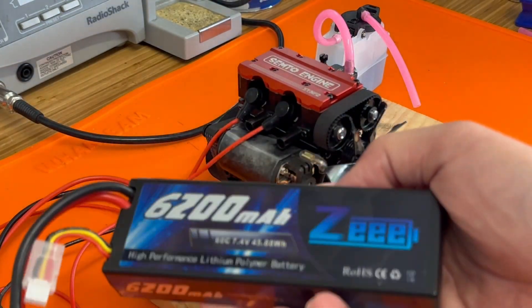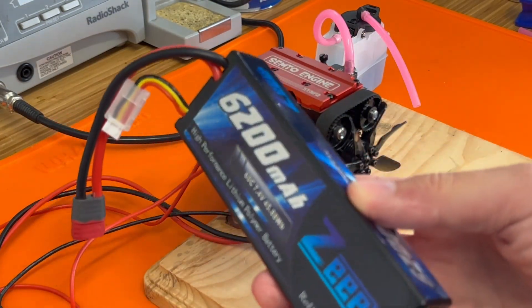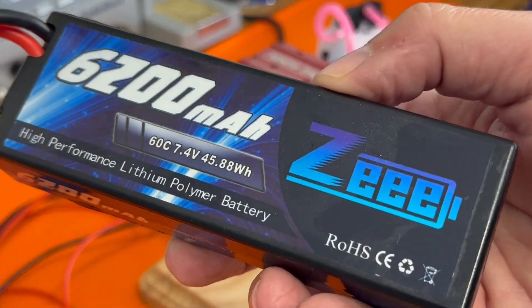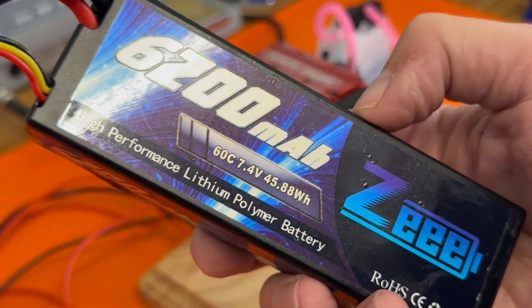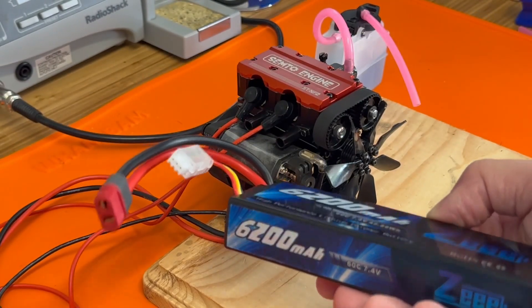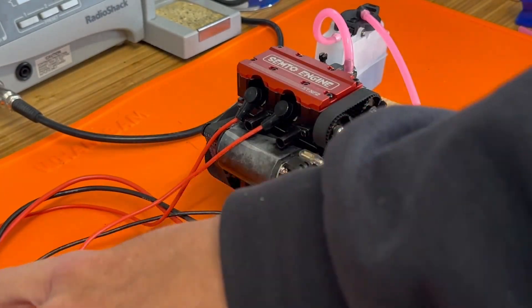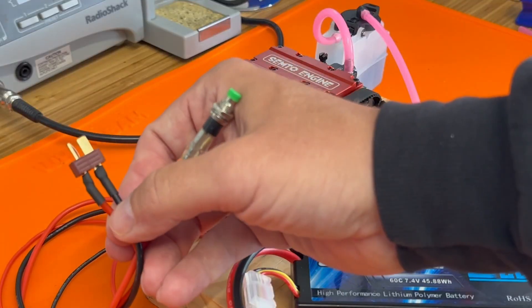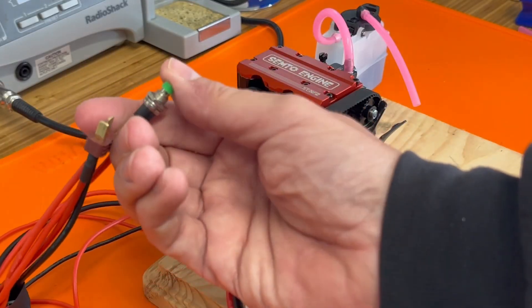Then you're going to want a battery for the starter. This is a 2S LiPo 6200. You don't need anything that powerful. It's just powering up your starter motor. And this already has a nice Deans connector on it which is what's on your wiring kit. And right here is your starter button.